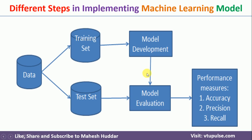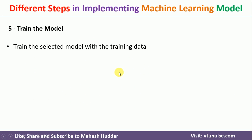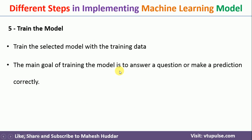After choosing a model, we need to do the training, which is part of model building. We train that particular model with the help of training data. The main goal of training the model is to get answers to questions or to make correct predictions in the future.